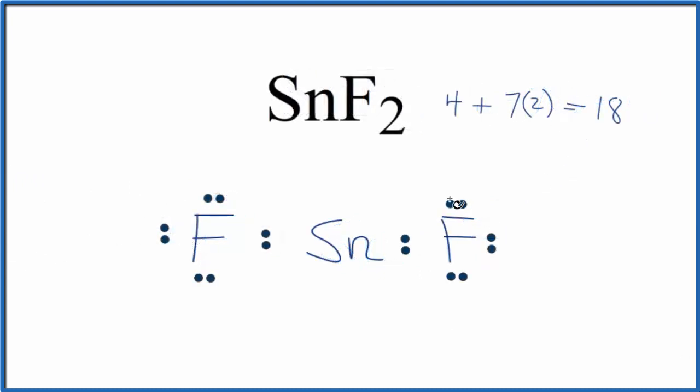So at this point, we've used 16 valence electrons. We only have 2 more. So let's put a pair of valence electrons here on the tin, and that's really all we can do with this Lewis structure.